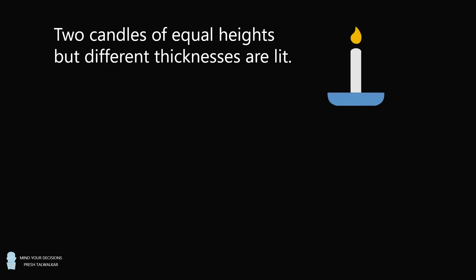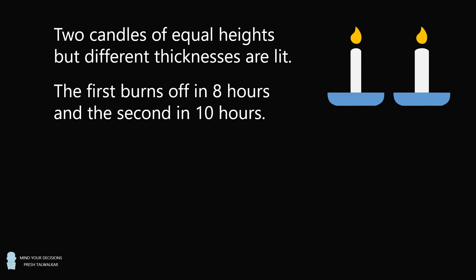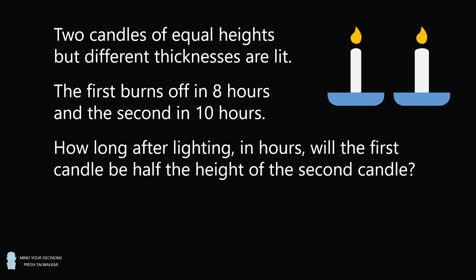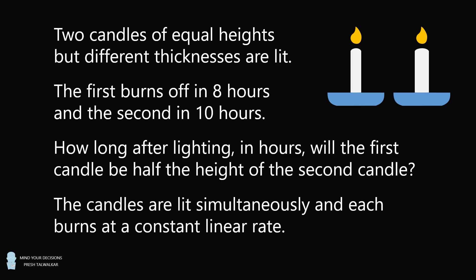Two candles of equal heights but different thicknesses are lit. The first burns off in eight hours and the second in ten hours. How long after lighting, in hours, will the first candle be half the height of the second candle? The candles are lit simultaneously and each burns at a constant linear rate.